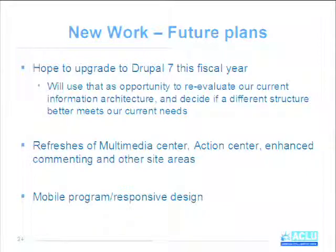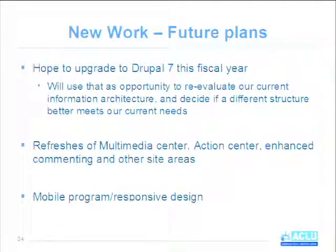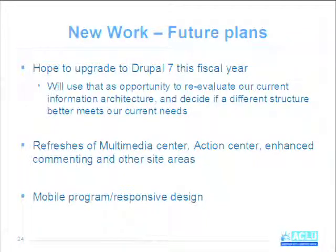For future plans, obviously we want to upgrade to Drupal 7. We're still on Drupal 6 like many other organizations. We're probably going to take that as an opportunity to reevaluate our current information architecture. Right now the core of our information architecture is around the campaign-project-issue hierarchy, and that's something as an organization we're beginning to move away from — we're trying to become a bit more lateral. We're probably going to reopen that conversation and see if it makes sense to continue working with that hierarchy or move to something more like a taxonomy. No matter what we do, we'll probably still end up with a pretty structured information architecture because we work on so many different issues that we need a way to guide our users through what we're doing.